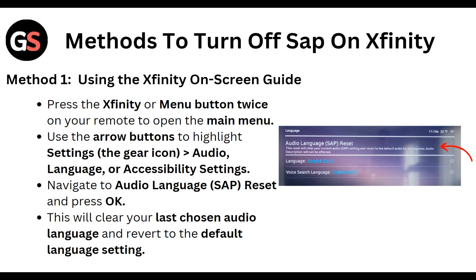Method 1: Turn off SAP on Xfinity using the Xfinity on-screen guide. Press the menu button twice on your remote to open the menu. Use the arrow button to highlight Settings to get to Audio Language or Accessibility Settings. Navigate to Audio Language SAP Reset and press OK. This will clear your last chosen audio language and revert to the default language setting.